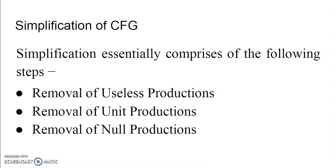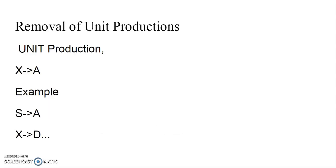Simplification of grammar has three important steps: removal of useless production, removal of unit production, and removal of null production. Whenever we say the grammar is simplified, it means it is free from useless production, free from unit production, and it is free from null production. Let's see each one in detail. Starting with the first one: removal of unit production.